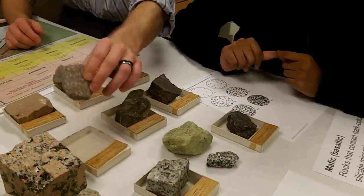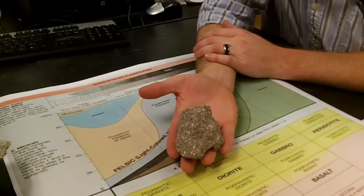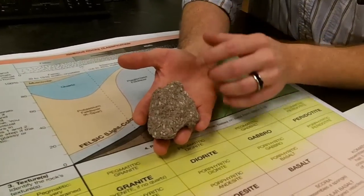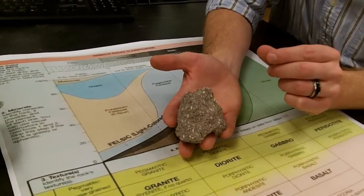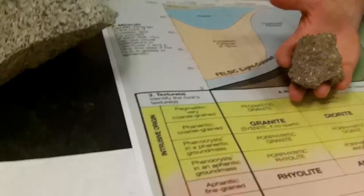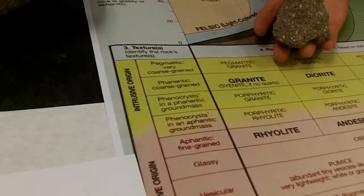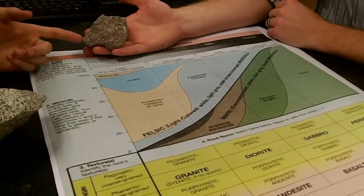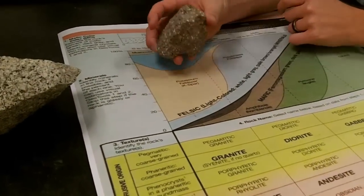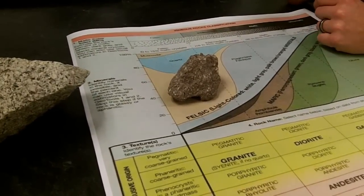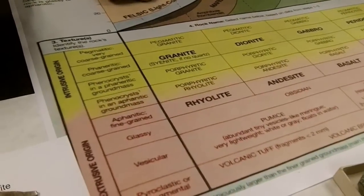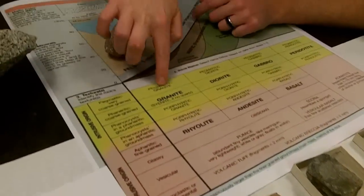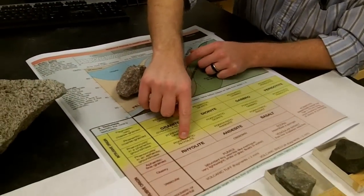Ready to do one more? Texture — porphyritic aphanitic. How do you know? It has both small and large crystals — large phenocrysts and a fine ground mass where we can't see crystals. Now composition — potassium feldspar? Yeah, how do you know? Because it has a pinkish color. Exactly — notice how the colors match up with different parts of the graph. So with a lot of potassium feldspar, the rock is porphyritic rhyolite. Perfect — felsic intersecting with porphyritic aphanitic gives us porphyritic rhyolite.